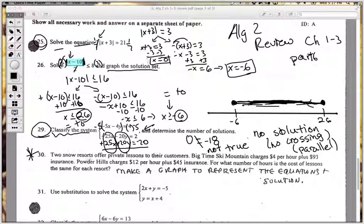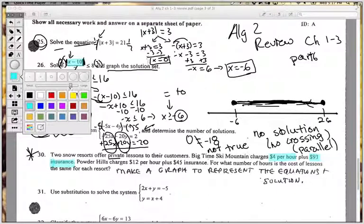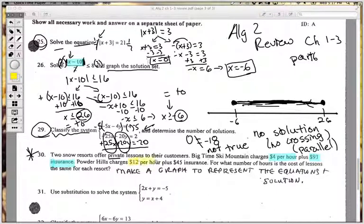Let's go back and do some more. Right now we got two snow resorts offer private lessons to their customers. Big time ski charges, you know what, this sounds like a really important one that maybe we need to highlight some stuff. So I'm going to say $4 per hour and $93 insurance. Powder Hills, I'm going to highlight this in a different color. Powder Hills charges $12 per hour and $45 insurance. So it's more expensive per hour, but it's cheaper to start with only $45 insurance. For what number of hours is the cost of lessons the same for each resort? Make a graph to represent the equations and the solution.